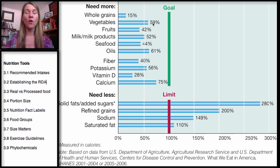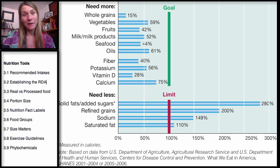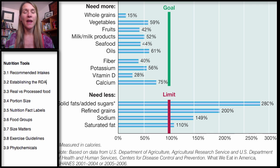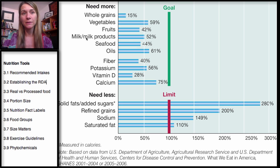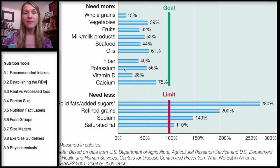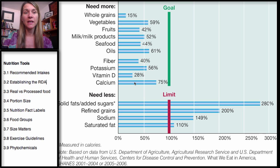Vegetables are at 59% of our goal. The only reason Americans are even at 59% — which is actually horrible — is because of French fries, since the most popular vegetable is the potato and the most common way we eat potatoes is as French fries. Fruits are at 42% of the goal. Milk and milk products — remember, most are processed and not necessarily good for you — are at 52%. Fiber is at 40%. And some important nutrients: Americans are not getting enough potassium, and definitely not enough vitamin D and calcium.